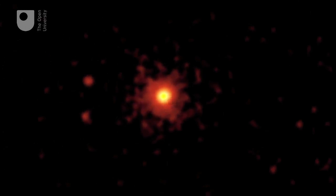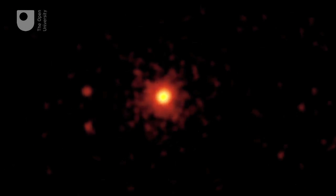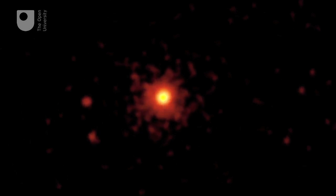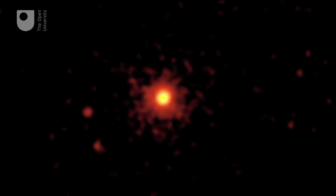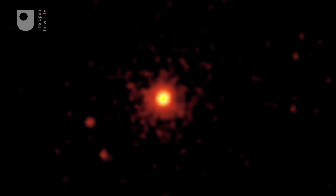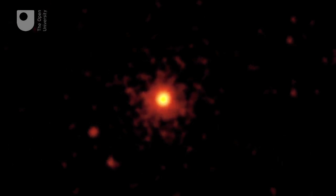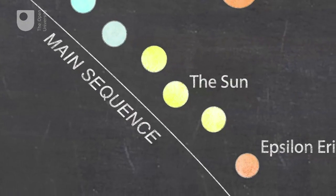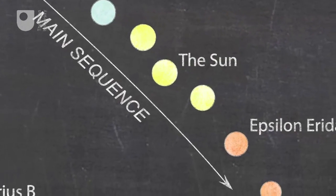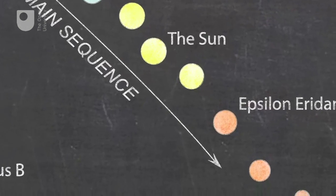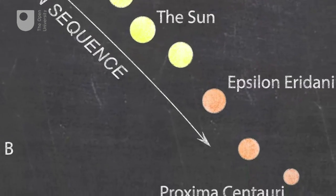They burn slowly and so live for a long time relative to other star types. They are positioned below the main sequence on the Hertzsprung-Russell diagram.